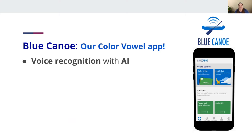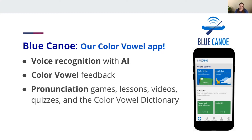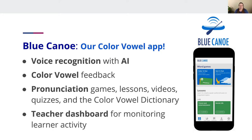Blue Canoe contains voice recognition with artificial intelligence that enables us to listen to the learner and provide Color Vowel-enhanced feedback, so they know exactly how they need to adjust their speech to sound more comprehensible. That Color Vowel feedback is provided through pronunciation games, lessons, videos, quizzes, and a Color Vowel dictionary that I'll be showing you shortly. Finally, we provide a teacher dashboard for monitoring learner activity.